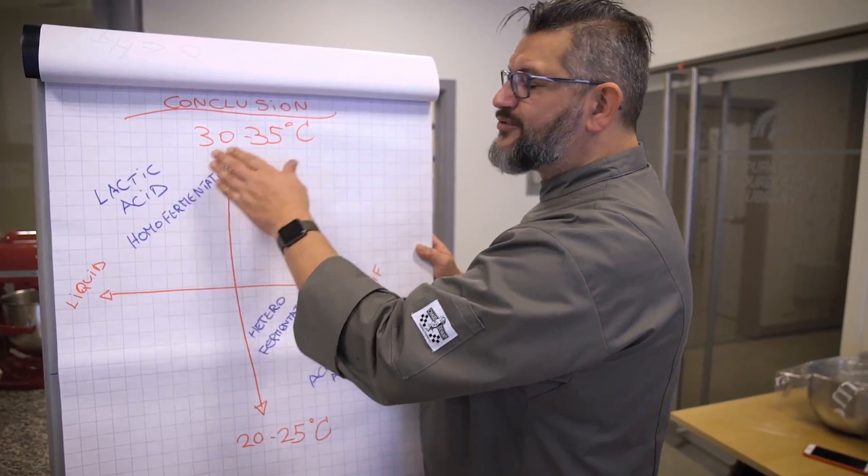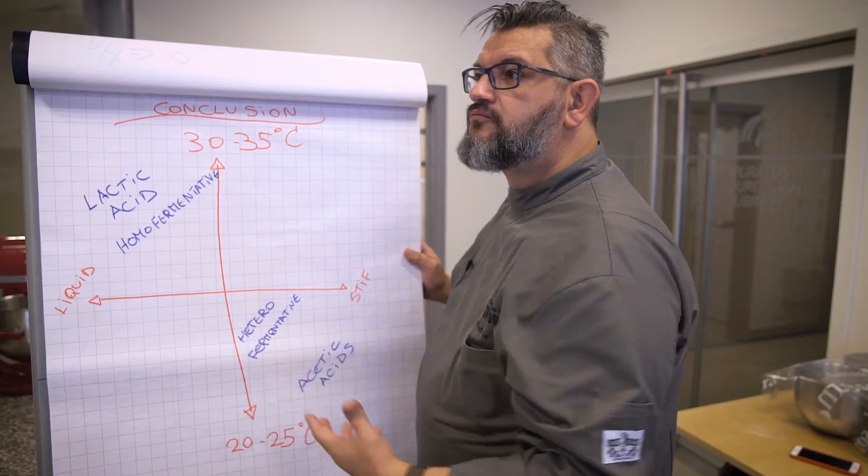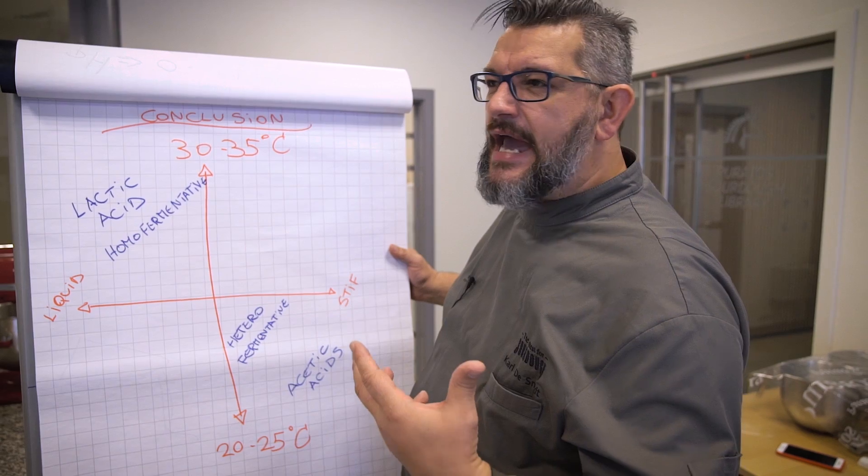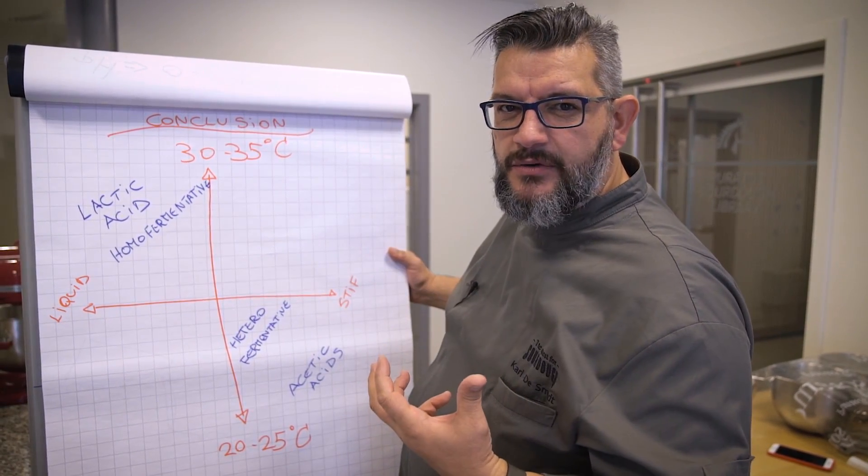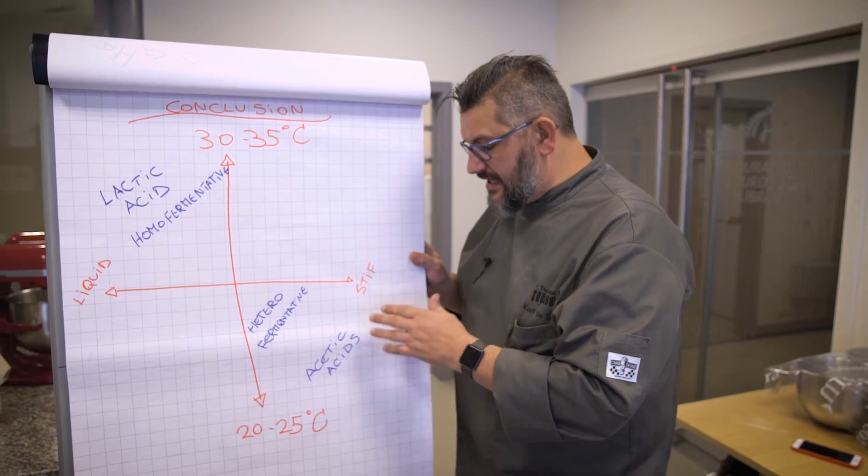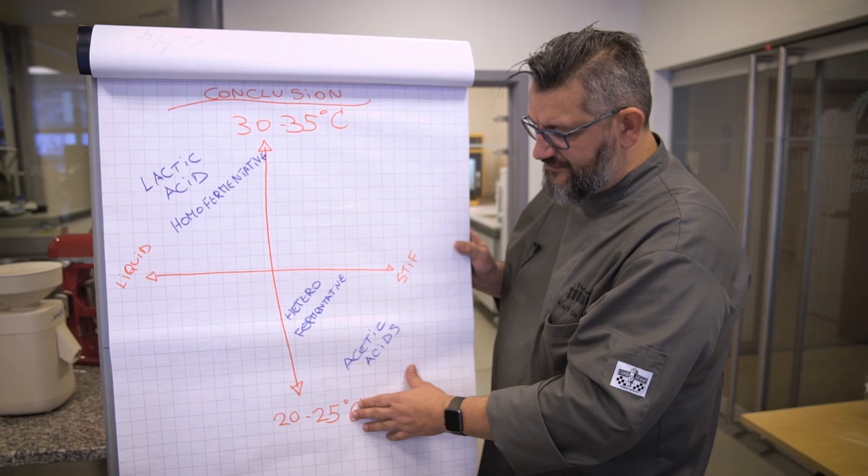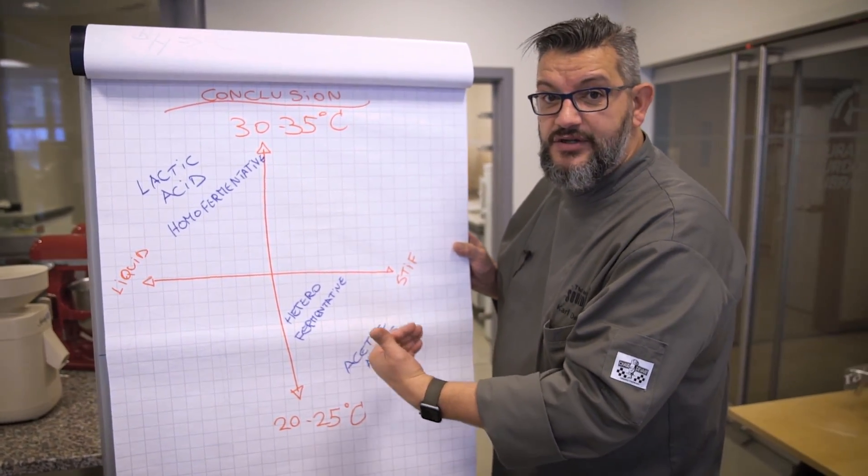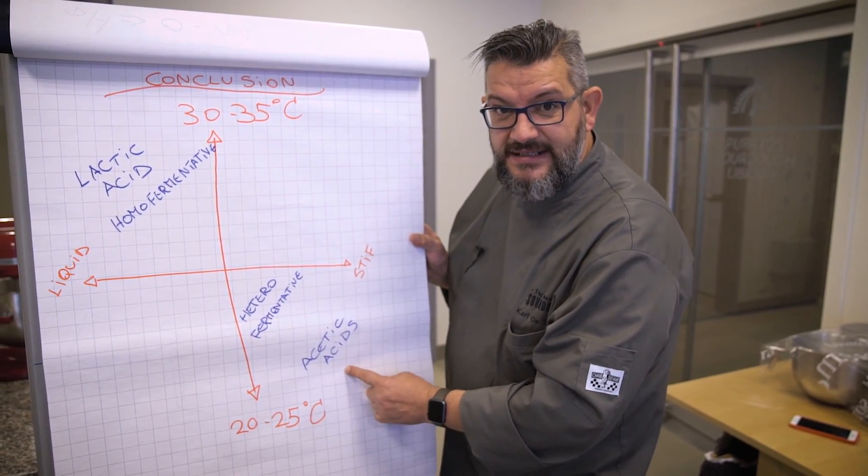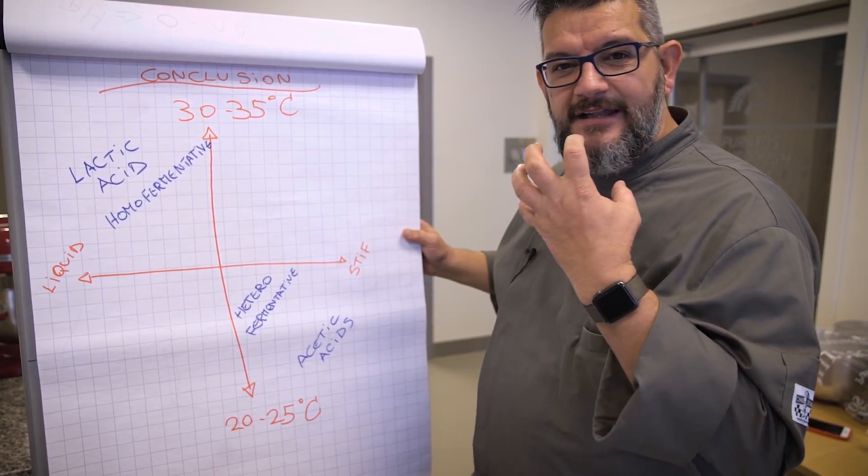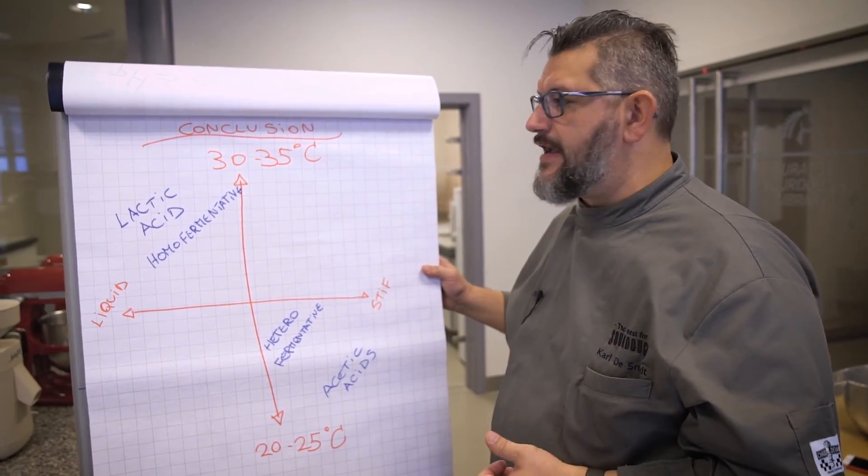A liquid sourdough at warm temperatures will give you a lot of lactic acid. That sourdough will be more yogurty, it will be creamy, milky, with a lot of dairy notes. Whereas if you have a stiff starter and you keep it at cooler temperatures of 20-25 degrees, you favorize the heterofermentative fermentation and there you have a lot of acetic acids. And that's what's causing that tang in your sourdough, that bit of vinegar type of sourdough.